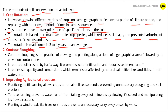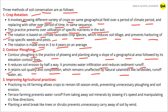Second is contour plowing. Contour plowing is the practice of plowing and planting along the slope of a geographical area, followed by its elevation contour lines. It reduces soil erosion by half. It promotes water infiltration and reduces sediment runoff. It retains soil quality and composition, which remains unaffected by natural calamities like landslides, runoff, water erosion, etc.